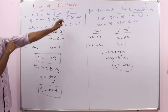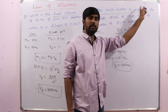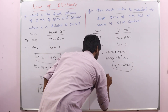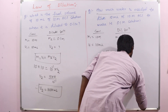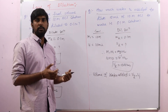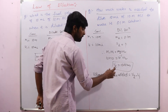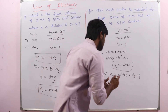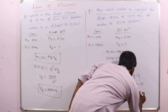Up to here, both problems are the same. But for Problem 2, the question is how much water is needed. So: volume of water added = V2 − V1. We started with V1 = 10 mL of solution and added some volume of water to get the final volume V2 = 1000 mL. Therefore, water added = 1000 − 10 = 990 mL.